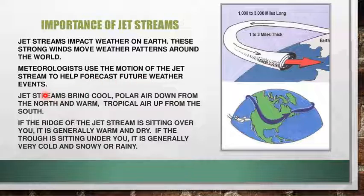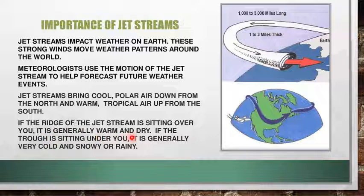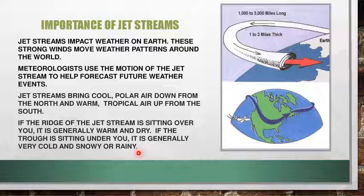Jet streams are very helpful to forecast monsoons in India also. Jet streams bring cool polar air down from the north and warm tropical air up from the south. If the ridge of the jet stream is sitting over you, means high pressure, it is generally warm. In the trough, it is generally very cold and snowy or rainy. I hope the topic is clear, children. Thank you very much.